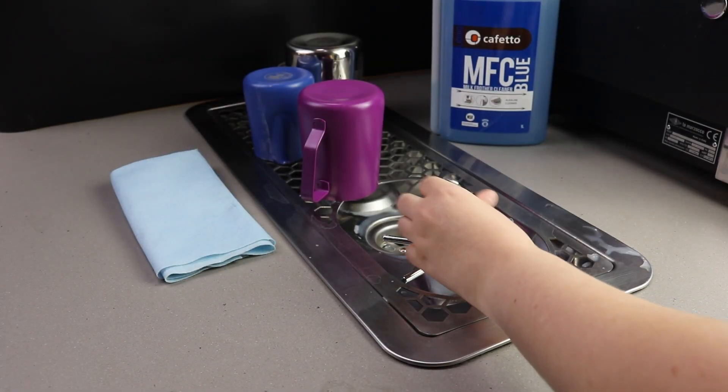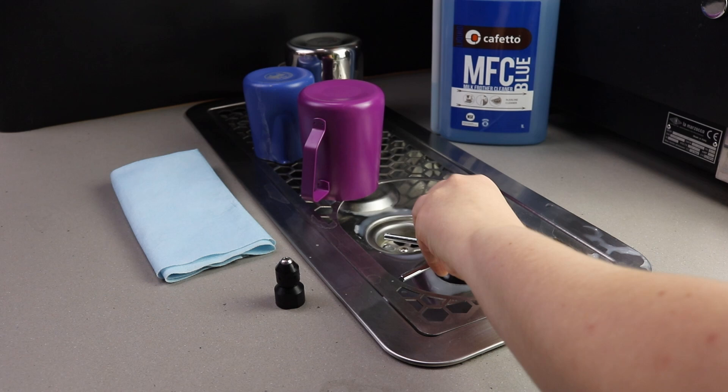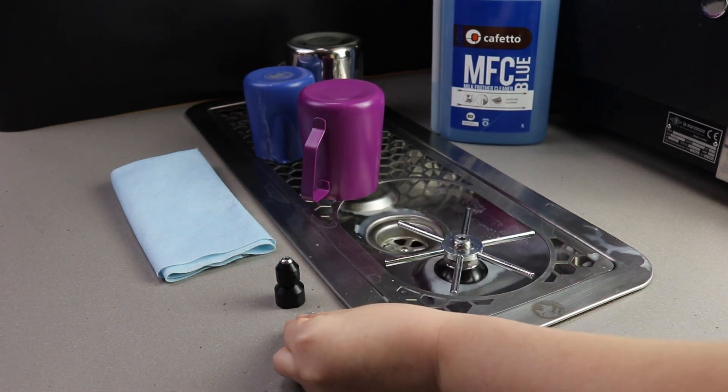Remove the spin jet by unscrewing it counterclockwise. Remove the wobble washer and the star and place aside.